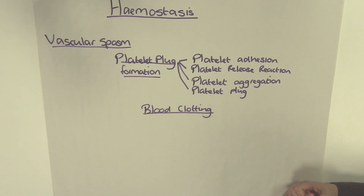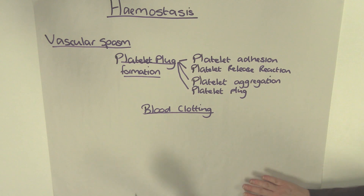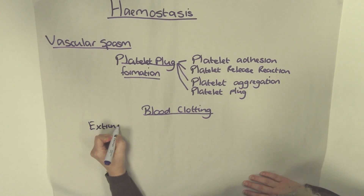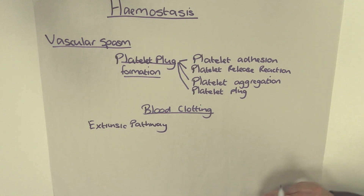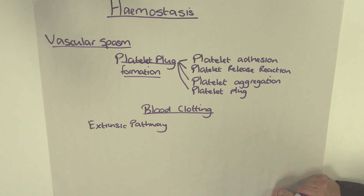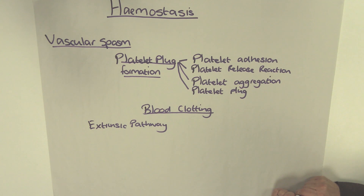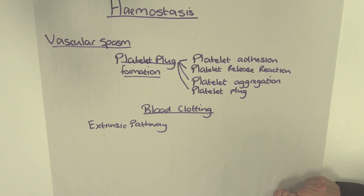Blood clotting can be divided into three pathways, called the clotting cascade. The first stage is known as the extrinsic pathway. It occurs within seconds of damage to the cells and takes place in tissues outside of the blood vessels — hence the word extrinsic, meaning outside of. Thromboplastin, which is a type of tissue factor, leaks into the blood from the damaged cells. In the presence of calcium, thromboplastin activates clotting factor 10. In turn, clotting factor 10 and clotting factor 5 make prothrombinase.